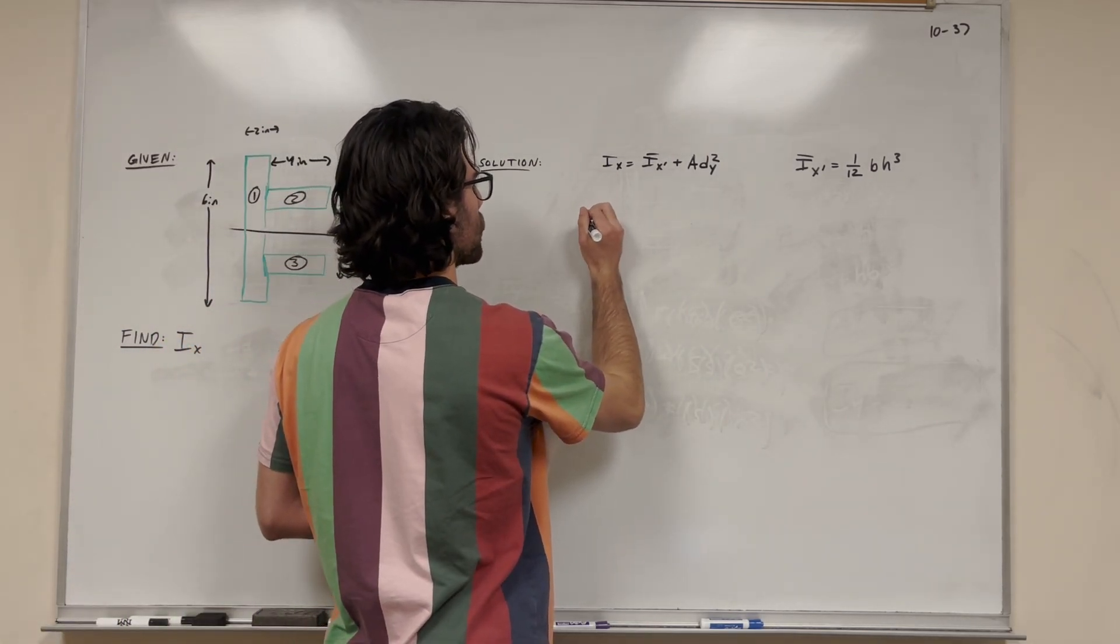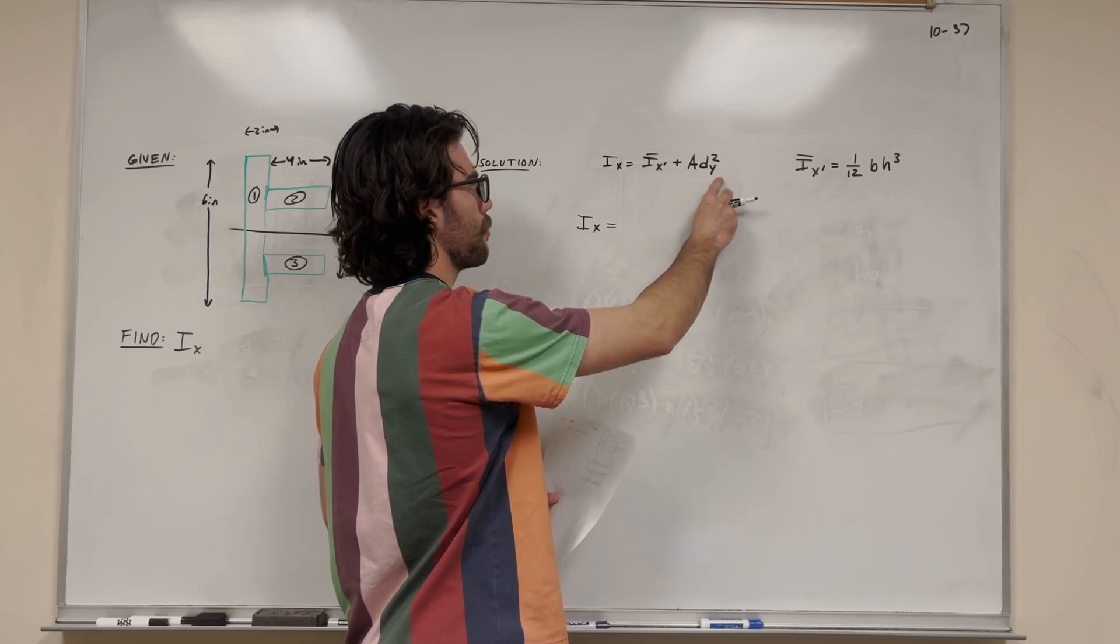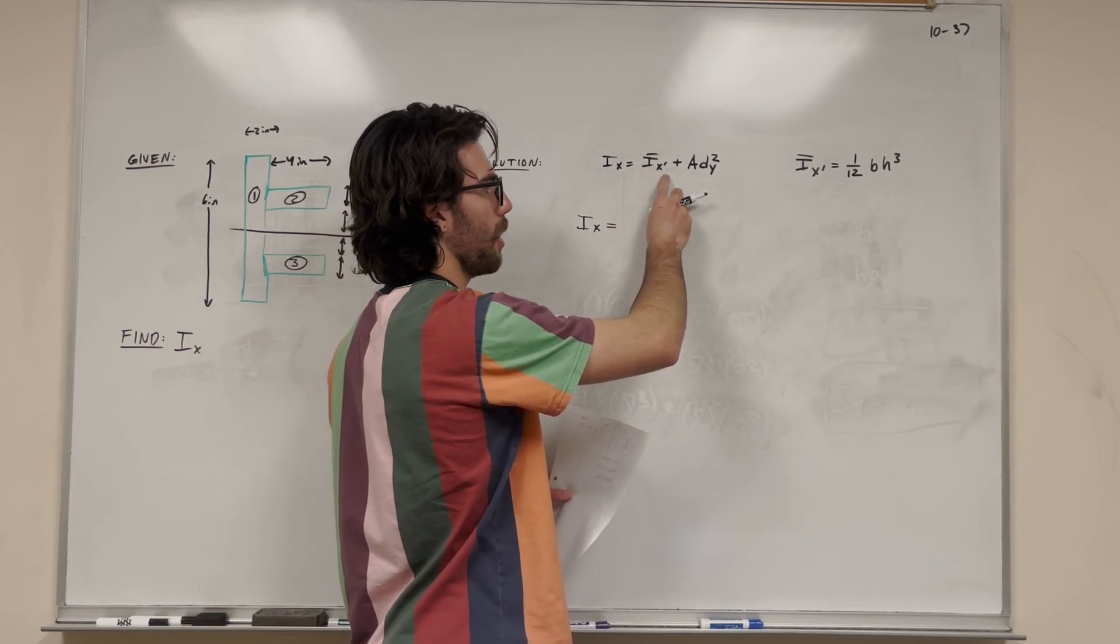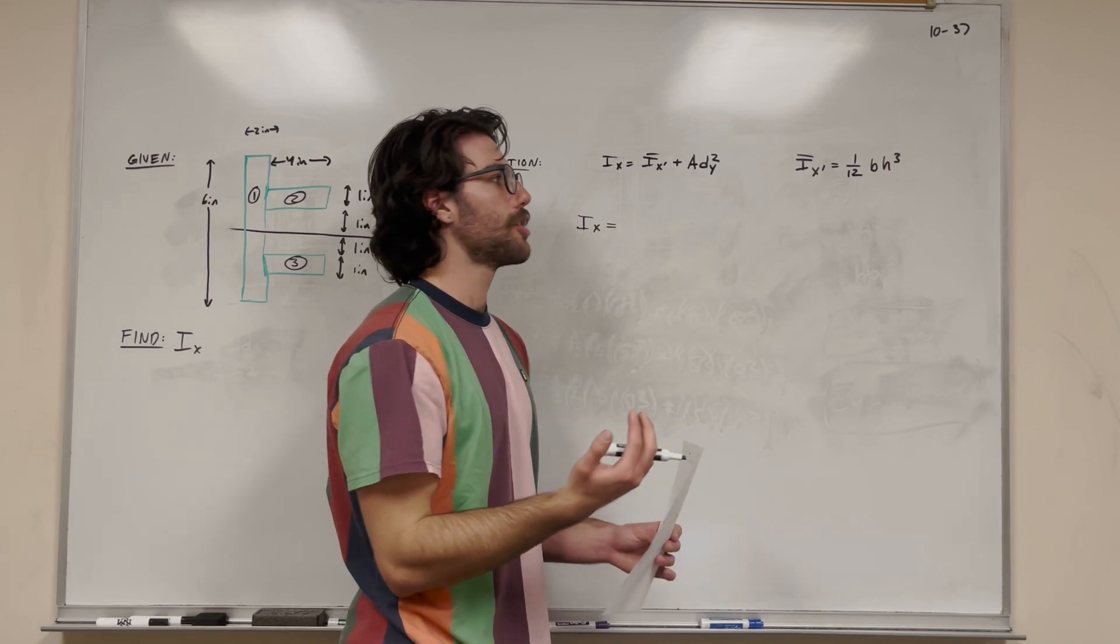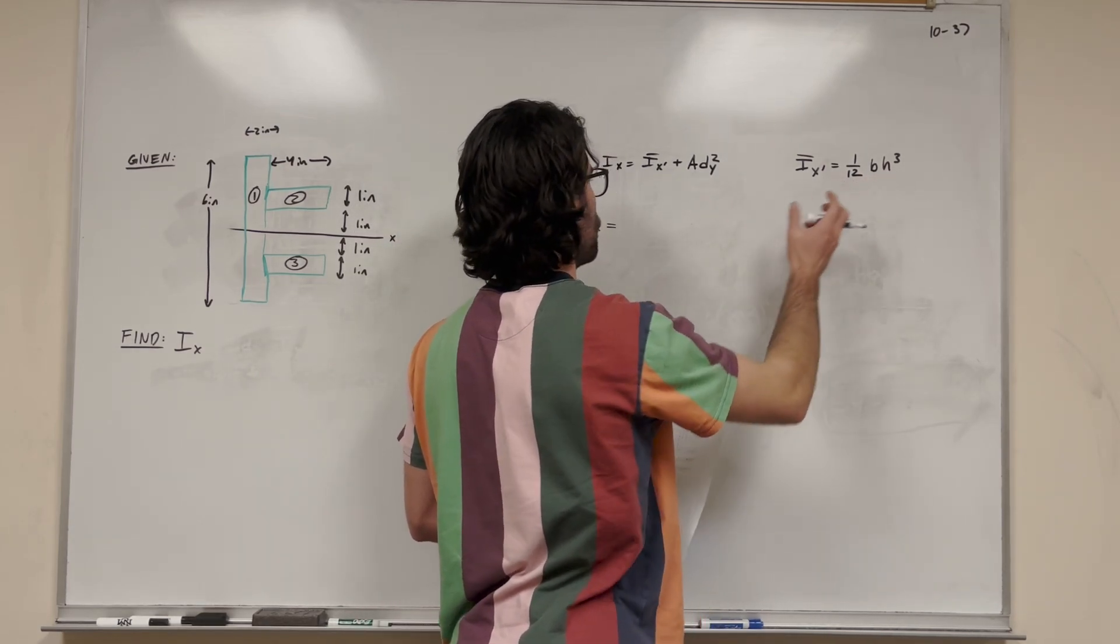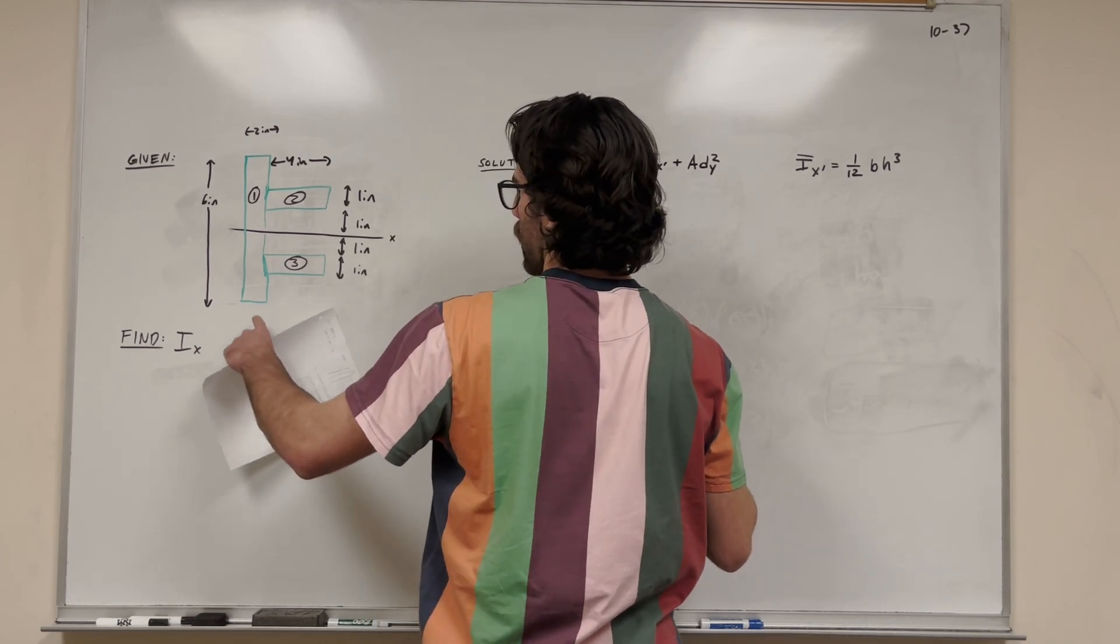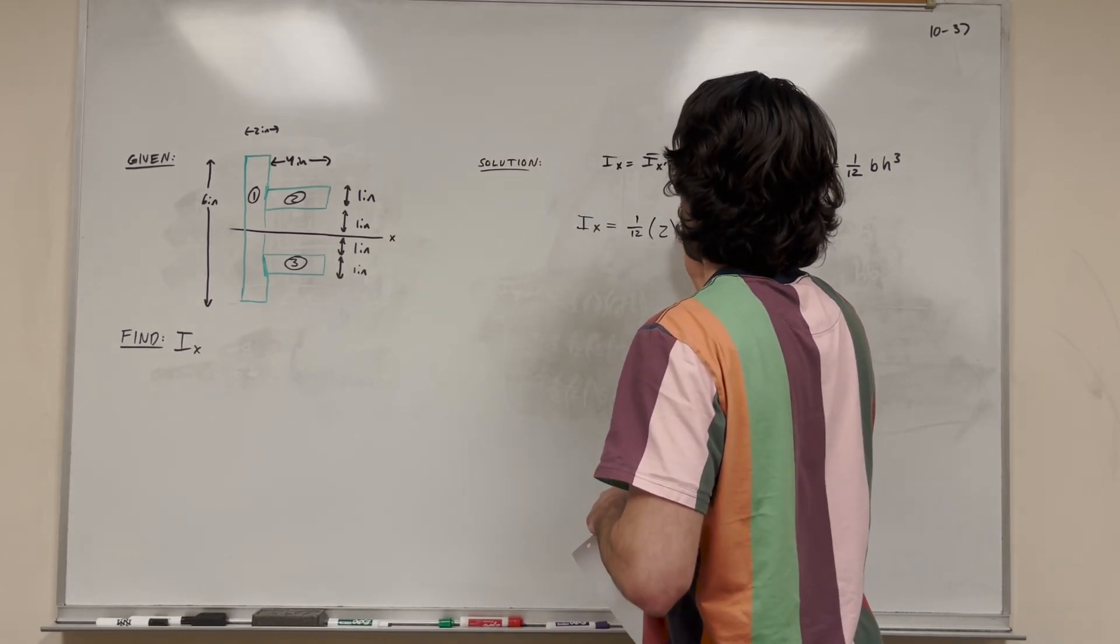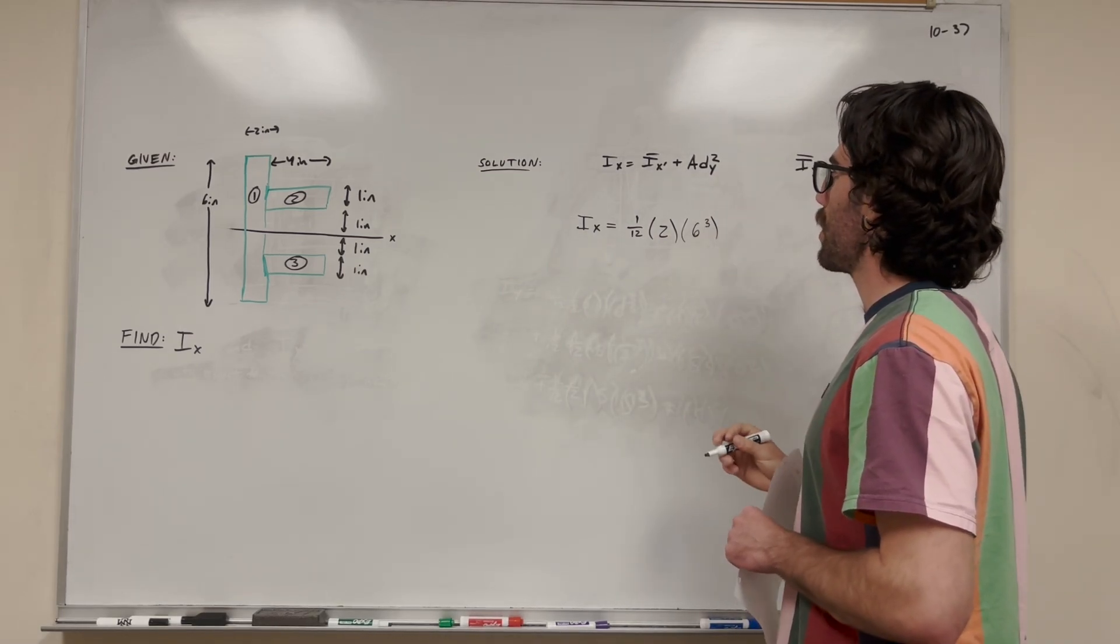So, let's just go ahead and start, and we'll figure it out as we go. So, the parallel axis theorem says we're going to add up this for each of the shapes. We're starting with I bar X prime, which for a rectangle, if you look in the back of the book, you have it for all sorts of different shapes. For a rectangle, it's equal to one twelfth base height cubed. So, we're going to go ahead and do that. One twelfth times the base of this rectangle. The base of it is two inches, and then the height of this rectangle is six inches. So, we're going to do six cubed, according to the equation.